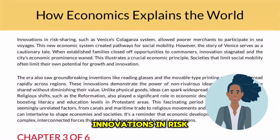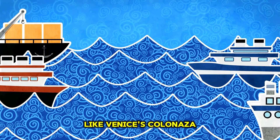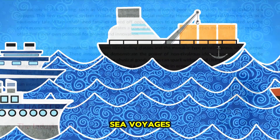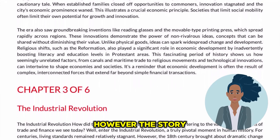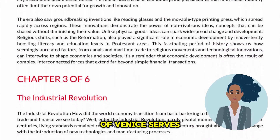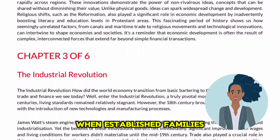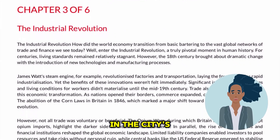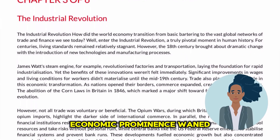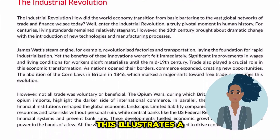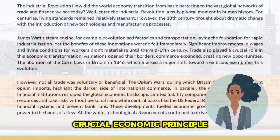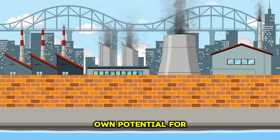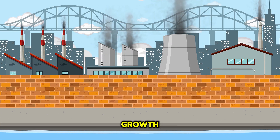Innovations in risk-sharing, like Venice's colonnaza system, allowed poorer merchants to participate in sea voyages. However, the story of Venice serves as a cautionary tale — when established families closed off opportunities, innovation stagnated and the city's economic prominence waned. This illustrates a crucial economic principle: societies that limit social mobility often limit their own potential for growth and innovation.